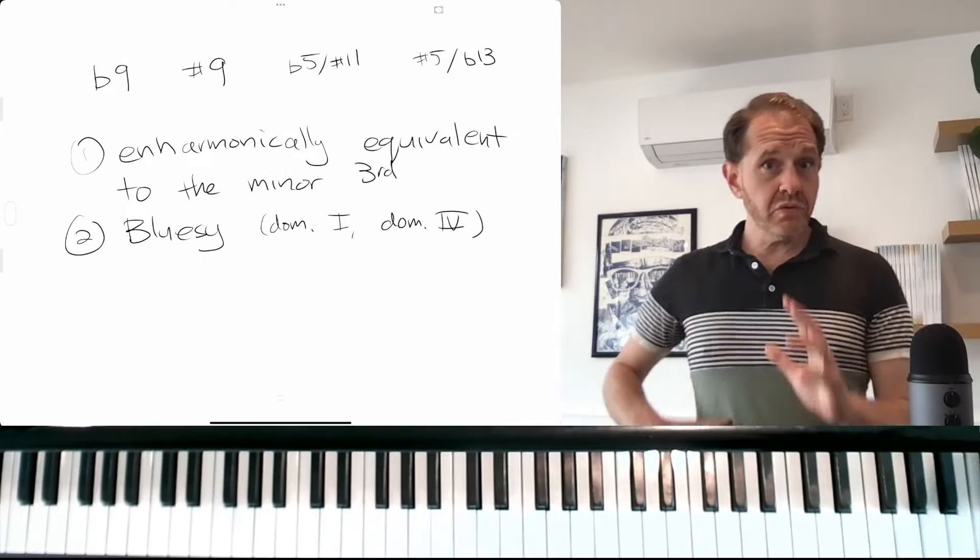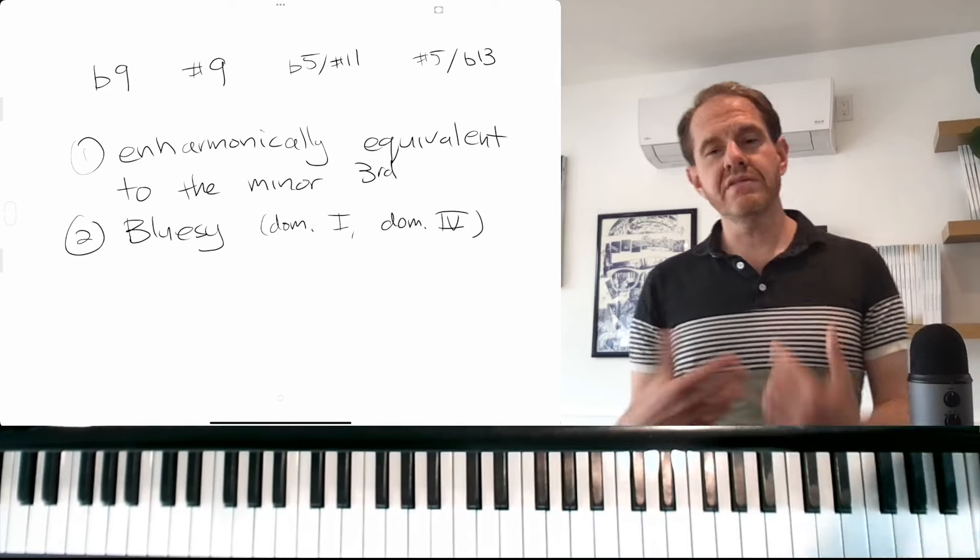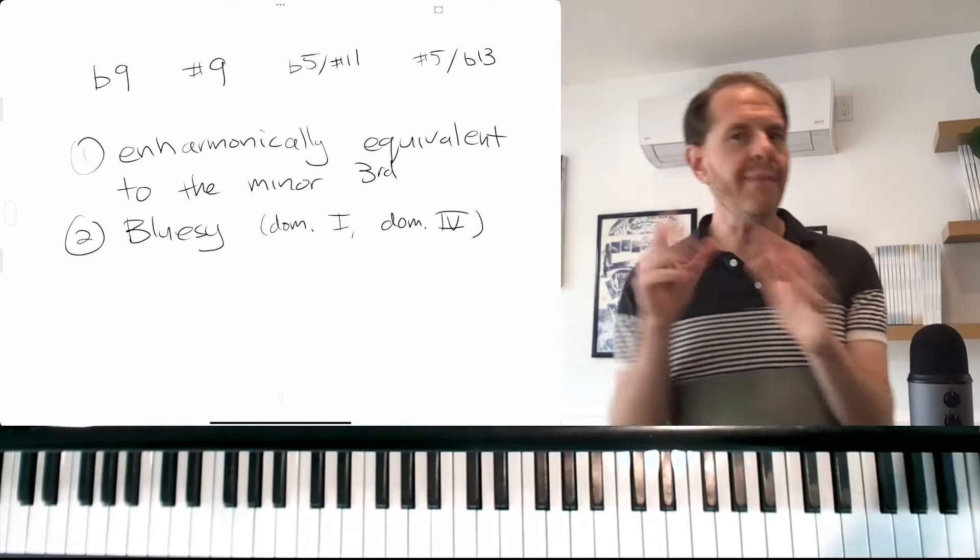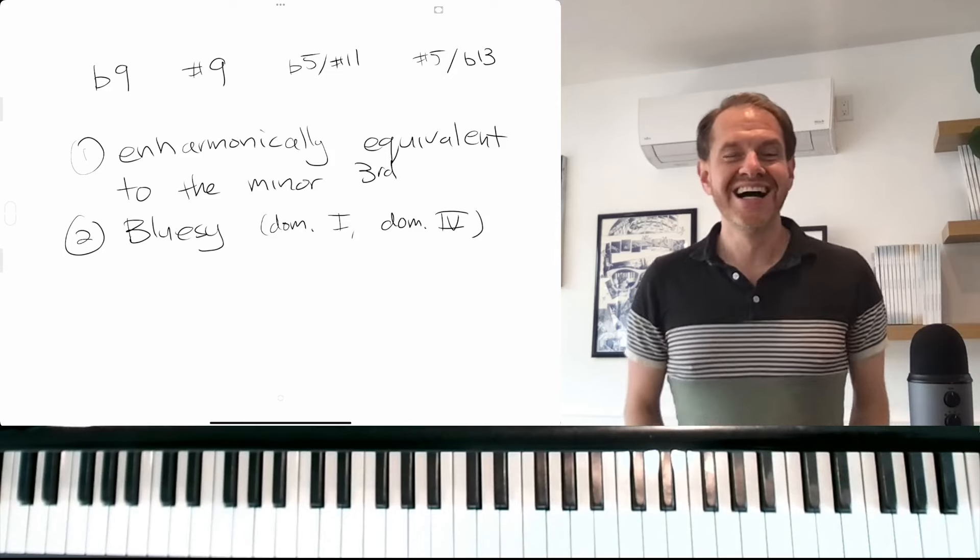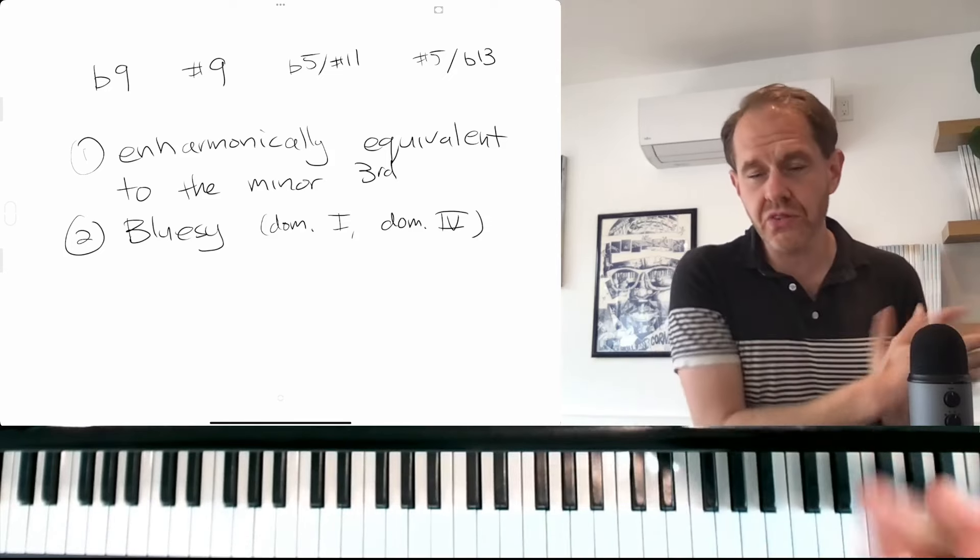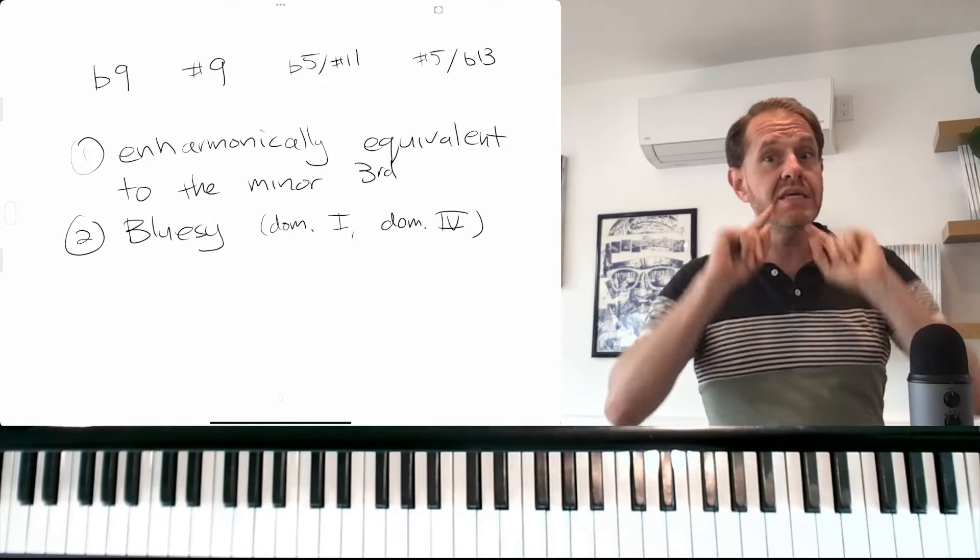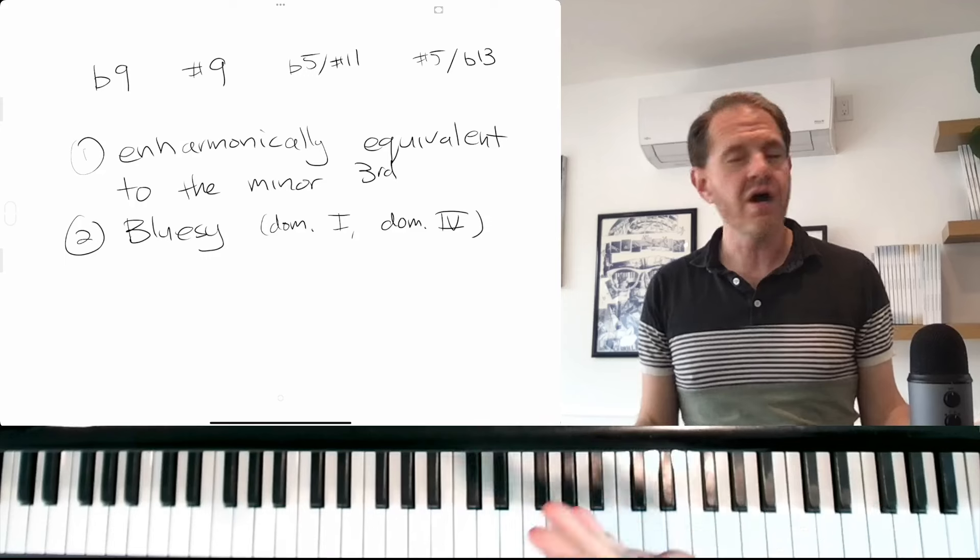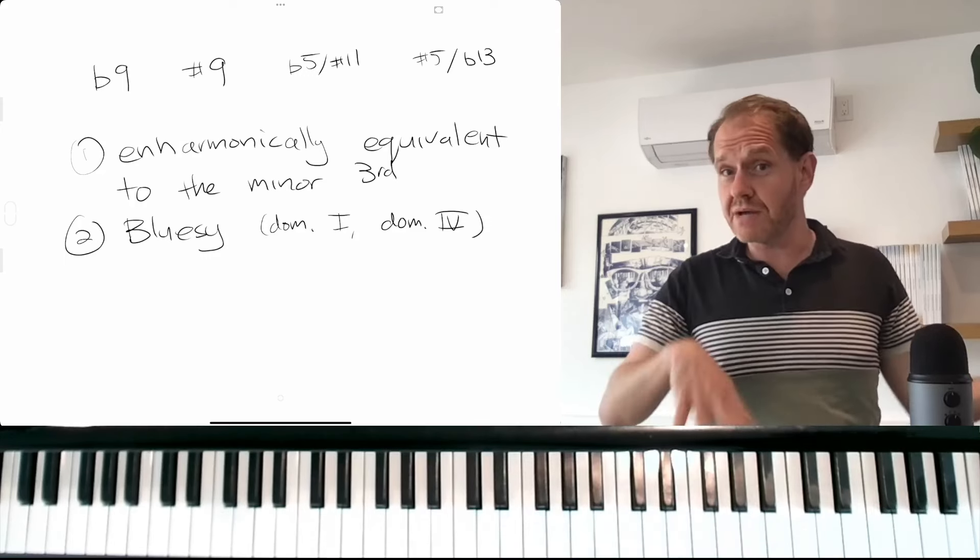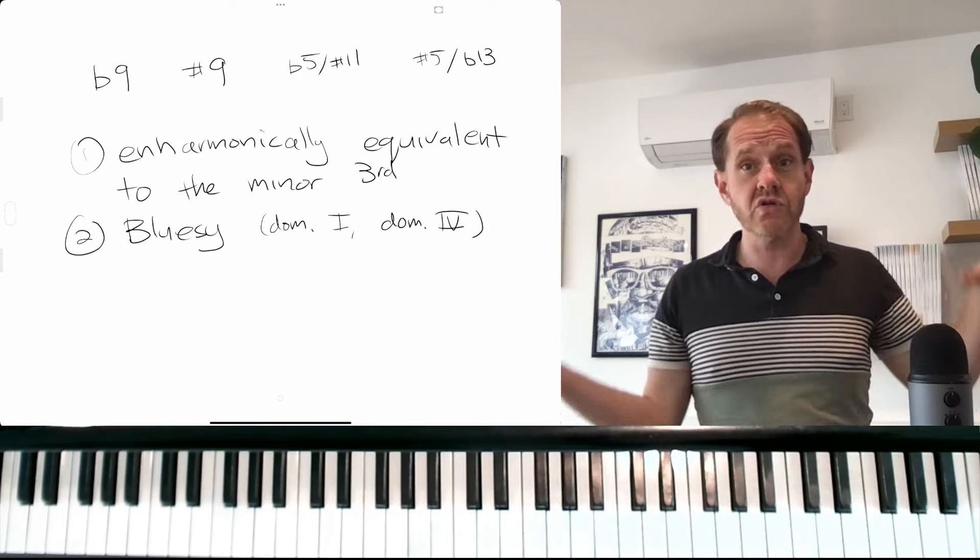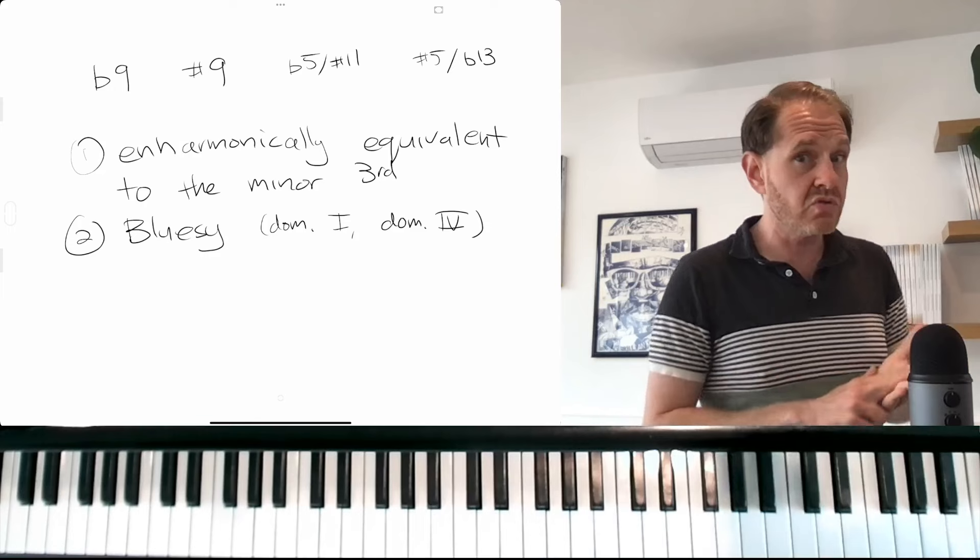So in bluesy, funky context, the sharp nine is definitely going to be added. I can imagine a question, I'm psychic for one of you out there, which is like do I always include the major third with the sharp nine because they kind of clash? And the answer is yes, you must include the major third. Otherwise you're playing a minor chord. And minor chords are lovely, but there's times for dominance and there's times for minor. So don't get rid of the major third, even if it's right next to the sharp nine.